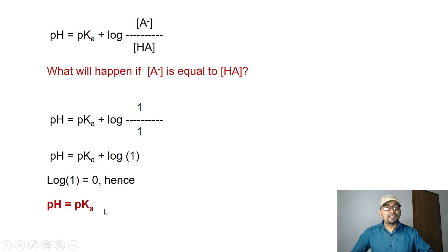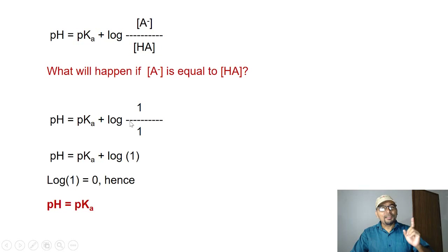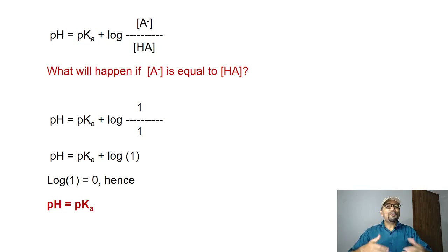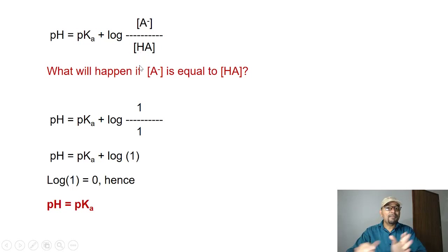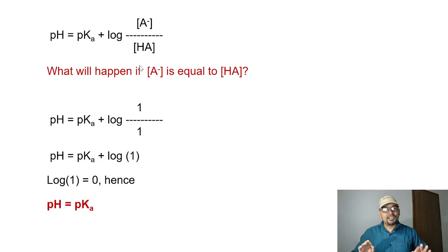So what does this equation tell us? It says that if the concentration of your conjugate base A⁻ is equal to the concentration of HA, then the pH at that point will be equal to your pKa value. We need to find the pH value — whether 3, 4, or any other — at which the concentration of the conjugate base equals the concentration of the acid, that is 50% conjugate base and 50% acid. Measure the pH at that concentration and you will get the pKa.